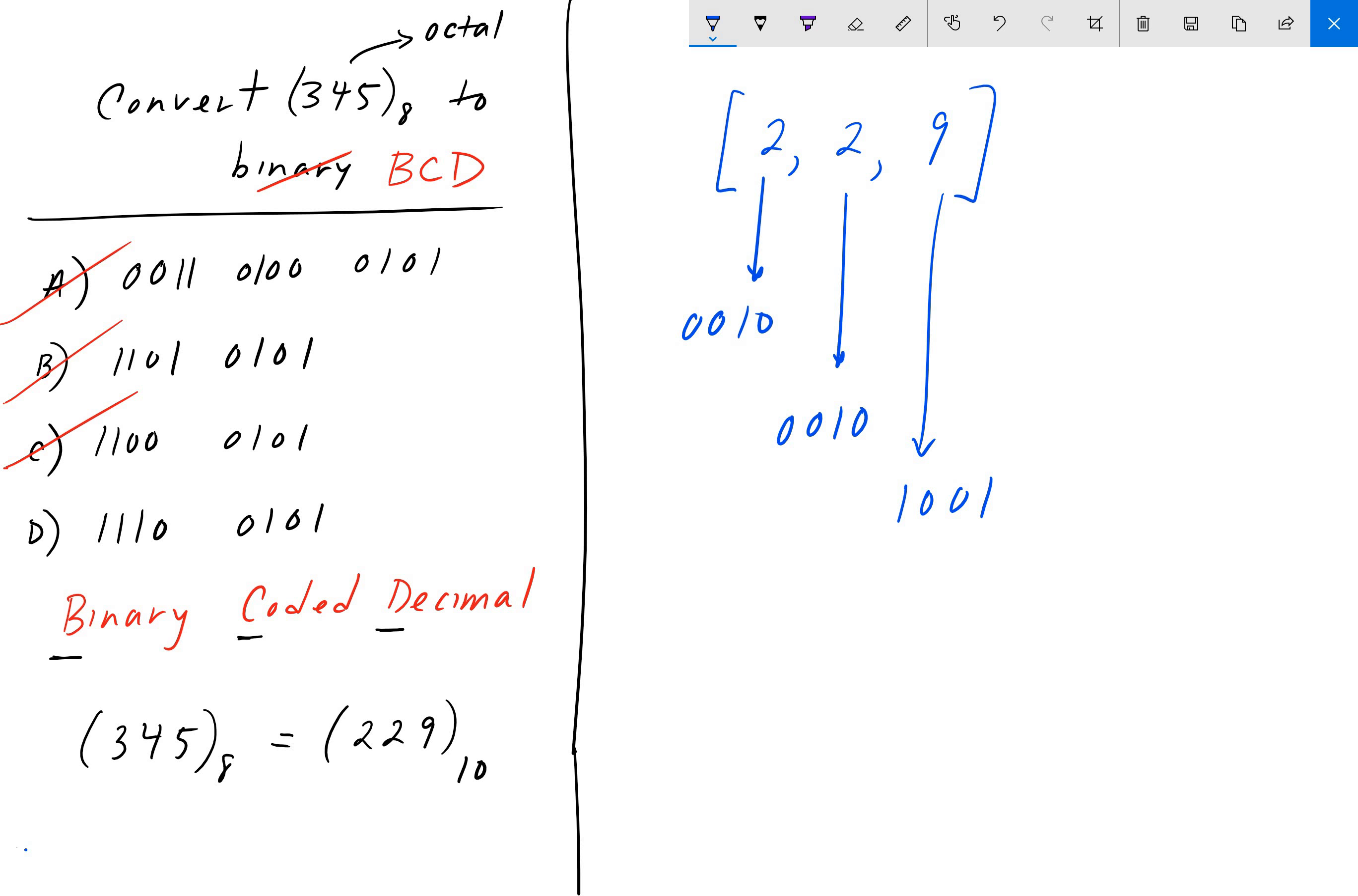So what we do is, from left to right, we serialize it. So we put these guys together: 0010, 0010, 1001.